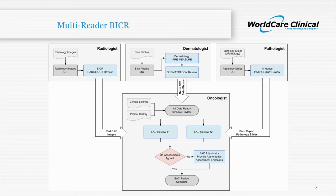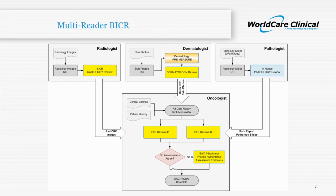Unlike the consensus approach, all data from the BICRs need to be digital. Temporal frequency of performing these assessments is not an issue since all the reviewers are independent. This assessment review paradigm allows for easy, ongoing training and testing, and the degree of precision of the assessment can be titrated. Precision is related to the number of independent reviews, and the number of assessments is predicated on the potential for bias, along with the variability and complexity of the assessment.